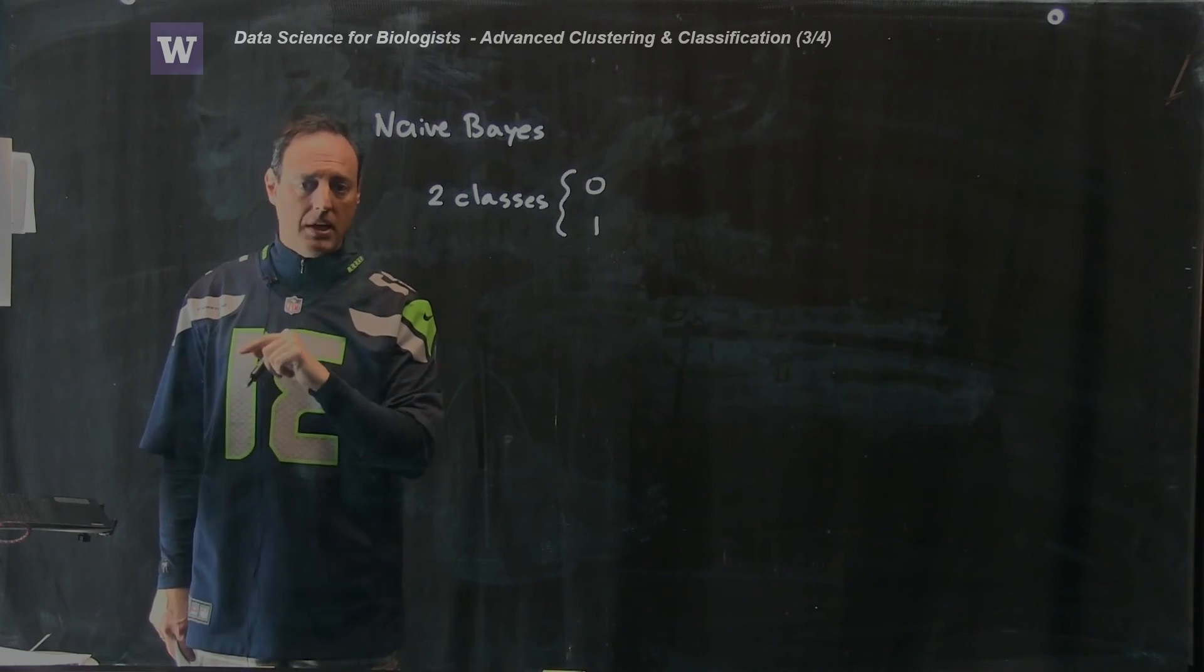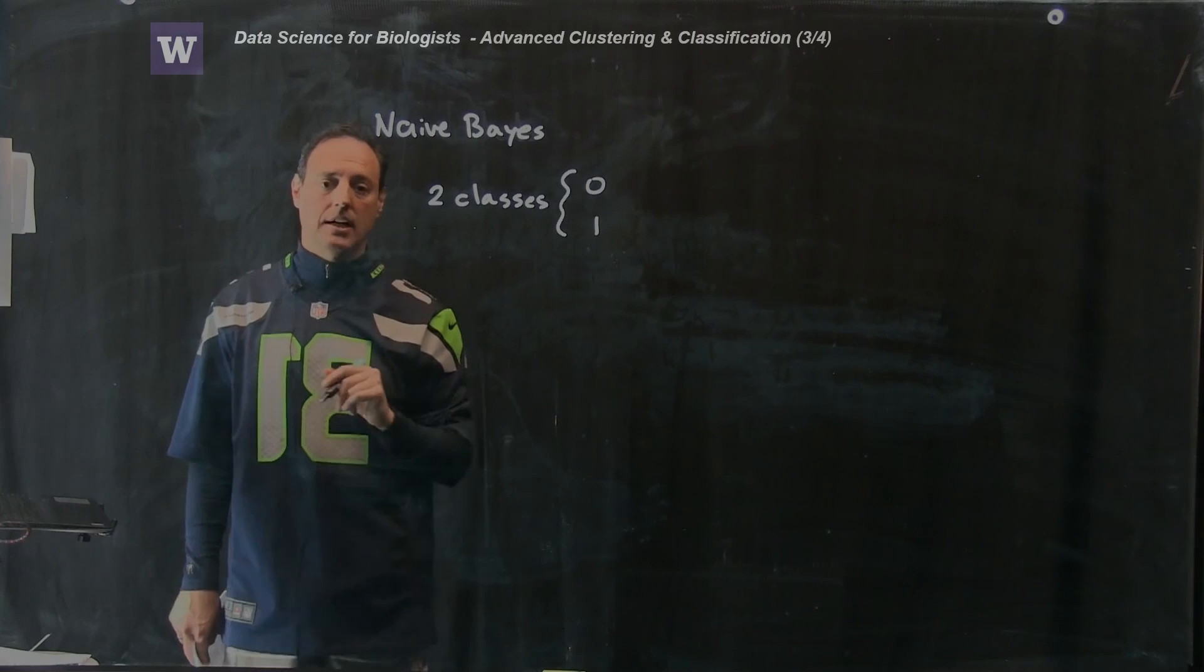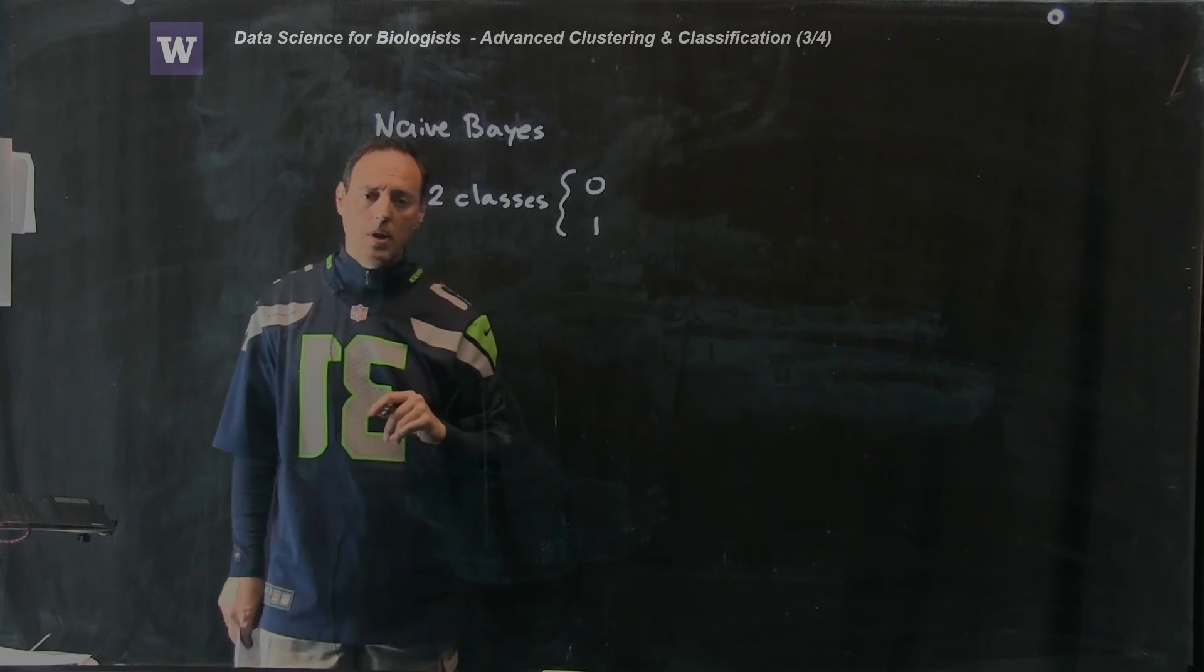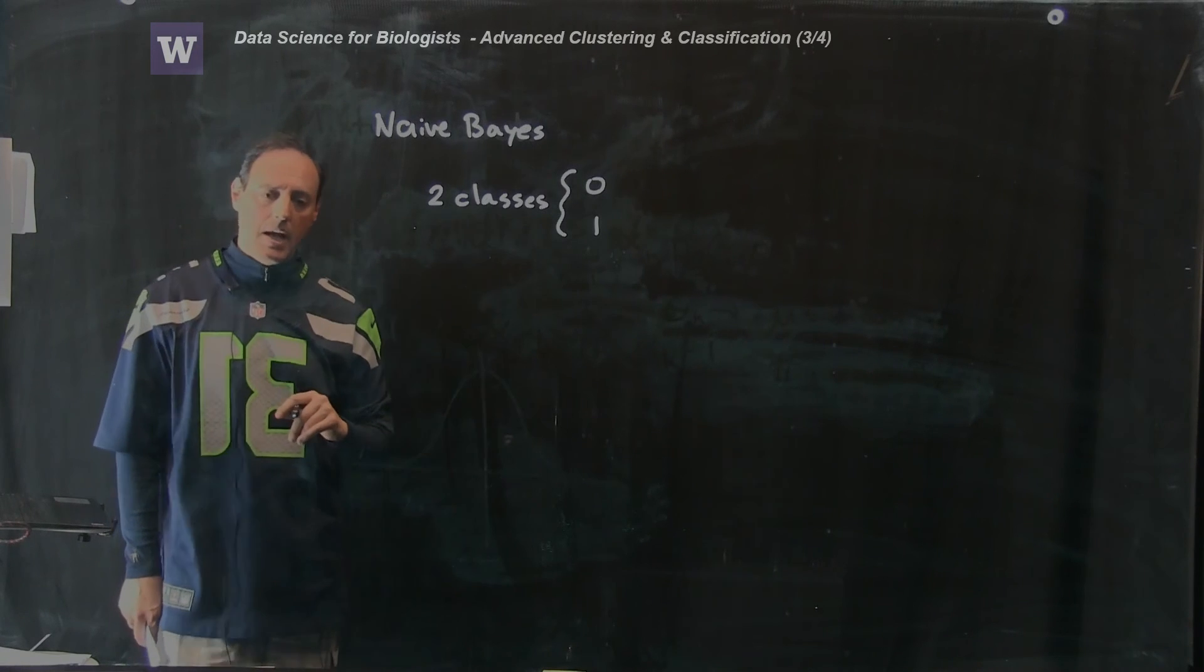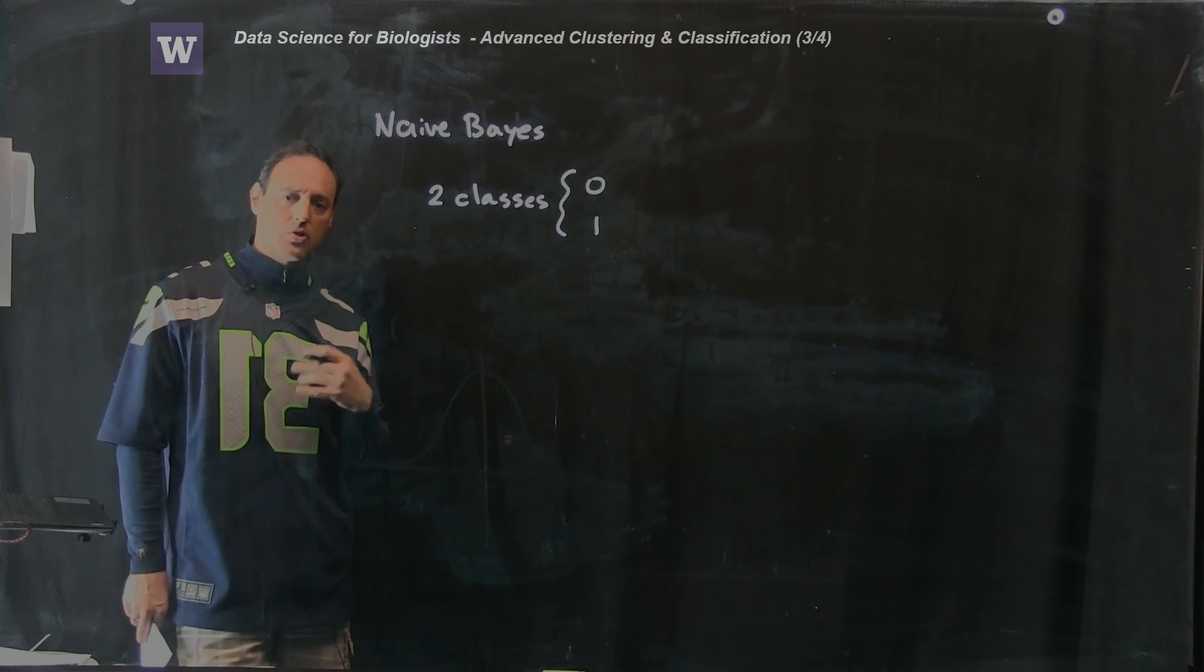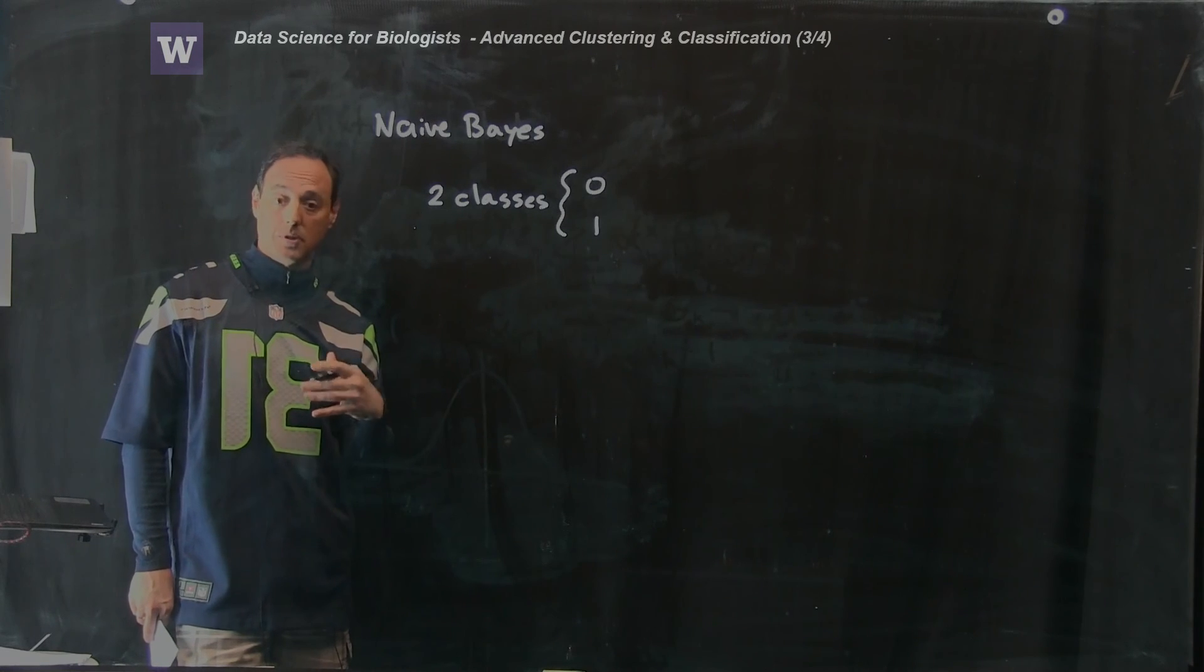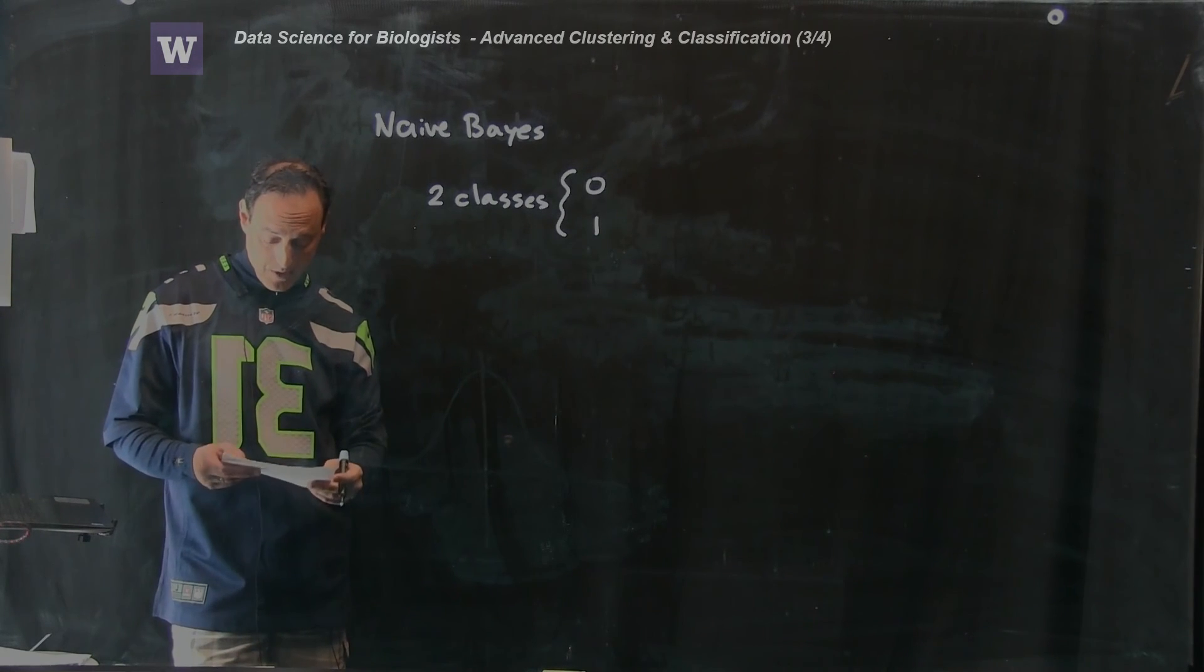Remember with Gaussian mixtures or k-means, you're trying to even guess how many classes are in your set, but here I said there's two classes, 0 and 1. And what I want to do is decide on a score. How do I score things? And I want to make a score that has really nice separation between these two classes.